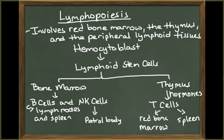The red bone marrow produces two distinct populations of lymphoid stem cells. One group remains in the red bone marrow and will divide to produce immature B cells and natural killer cells. As these immature B cells and natural killer cells mature, they enter the bloodstream and migrate to peripheral tissues. Most B cells move into the lymph nodes, the spleen, or other lymphoid tissues. Natural killer cells patrol the body, moving through peripheral tissues in search of abnormal cells.